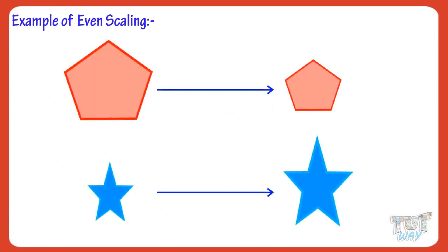These are some more examples of even scaling. Here, each dimension of the figure is evenly scaled, that is, increased equally. Here, this figure is made smaller, but the shape is not changed, so this is even scaling.